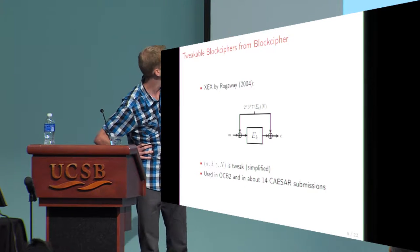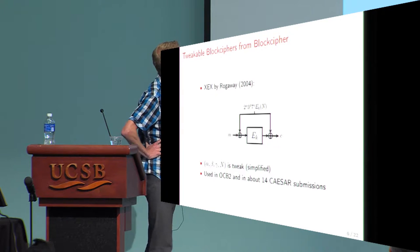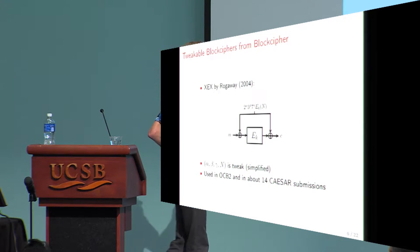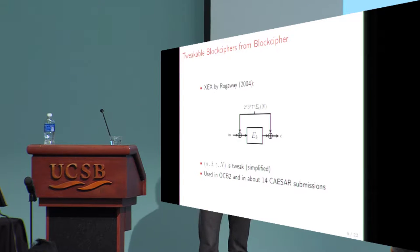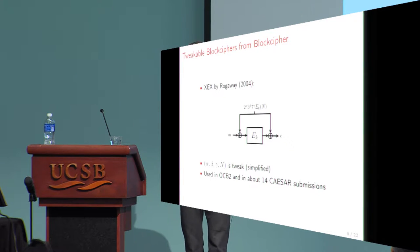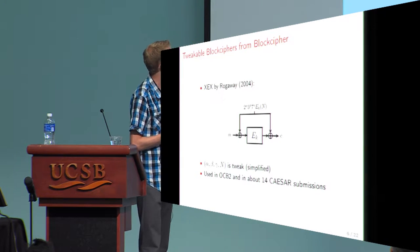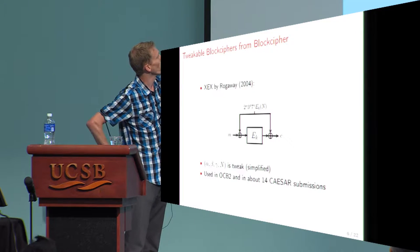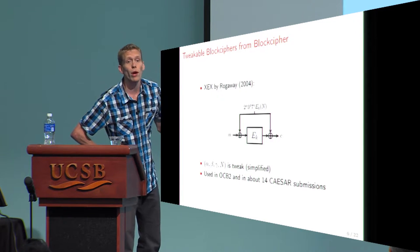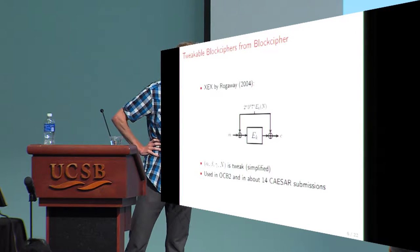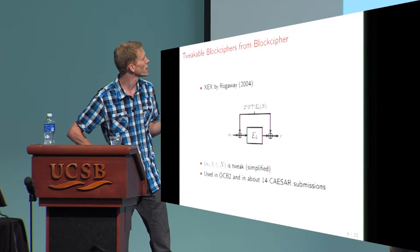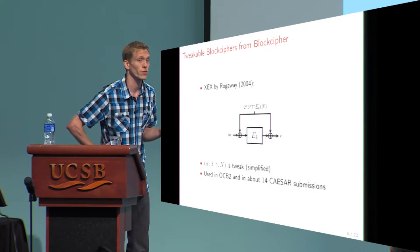The idea of the new scheme is that the masking is not based on a universal hash function, but you use the same block cipher. The tweak consists of a nonce and alpha, beta, and gamma, which are used to represent the position in the OCB scheme. The mask is then computed as 2^alpha times 3^beta times 7^gamma times the encryption of the nonce. It was introduced for OCB2, but there are many CAESAR submissions that adopted this idea.